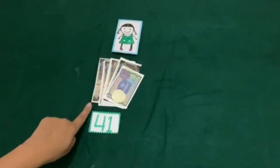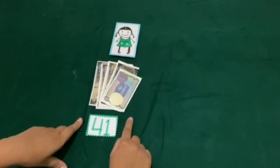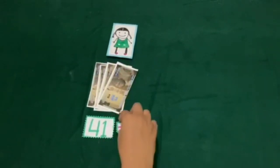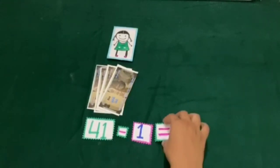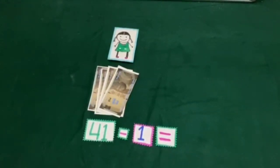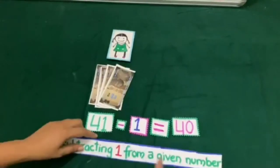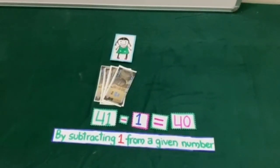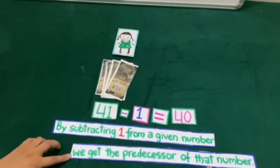Rusleene has 41 rupees and she went to the market and bought a 1 rupee candy. So she spent 1 rupee, which means 41 minus 1 is equal to 40. Now we have learnt that by subtracting 1 from a given number, we get the predecessor of that number.